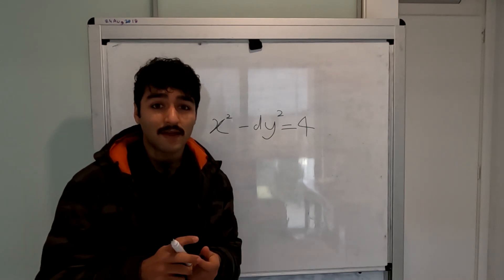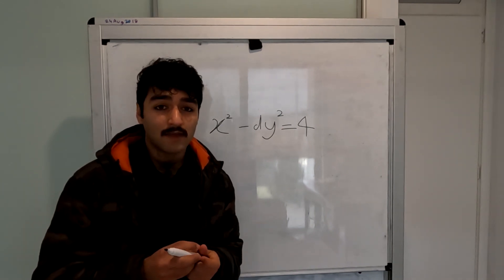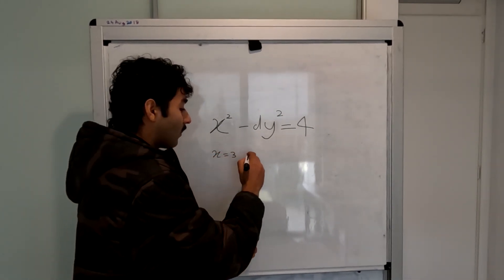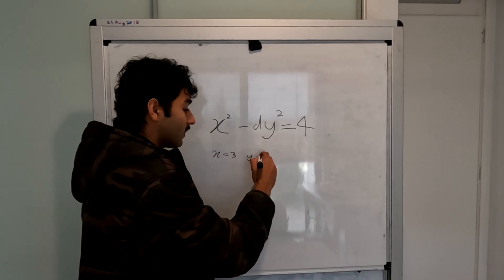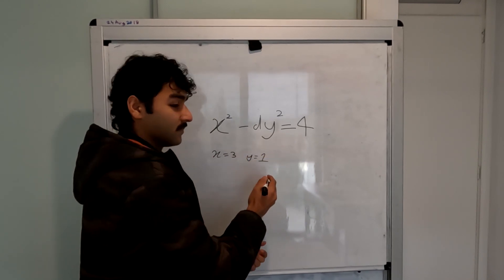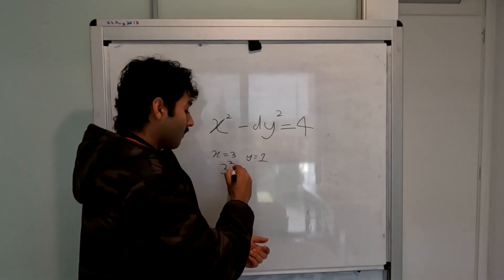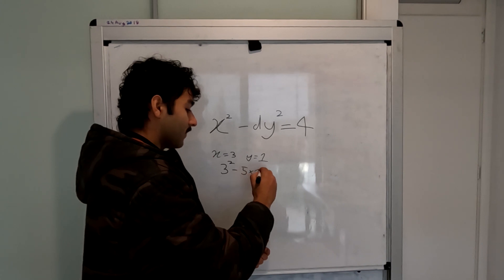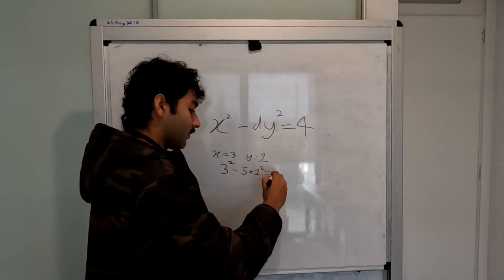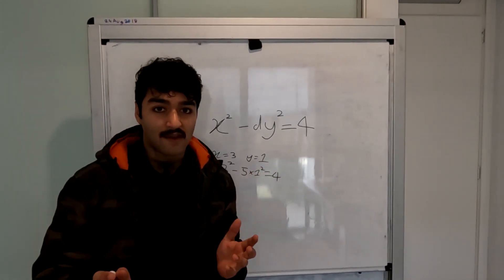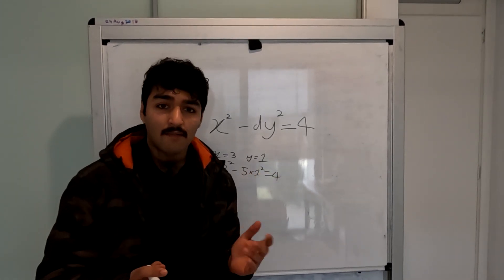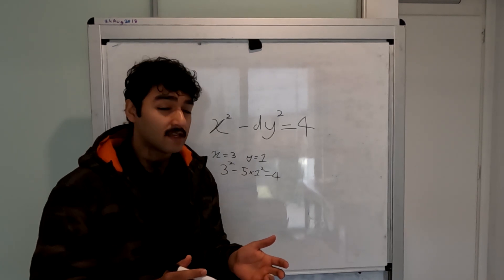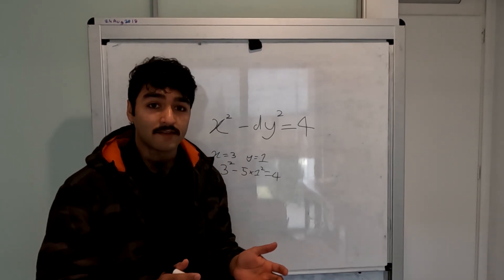After a little bit of experimenting, you might be able to see that x equals 3 and y equals 1 is such a solution, as 3 squared minus 5 times 1 squared equals to 4. How about we try for a different value of d? Let's try d equals to 37.